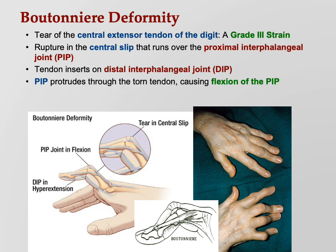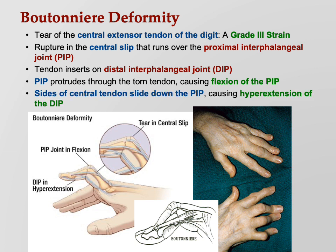What happens when it shreds is the proximal interphalangeal joint — the middle knuckle — pushes through the torn tendon, causing flexion of the PIP joint. It then pulls on the distal interphalangeal joint, pulling it upward. Just like you see in the lower right, that's what it causes your finger to do.